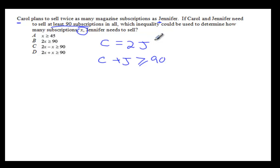Alright, so now we're using C equals 2X, where X is Jennifer's subscriptions. In this case, we're going to have C plus J, where J is X, greater than or equals to 90.